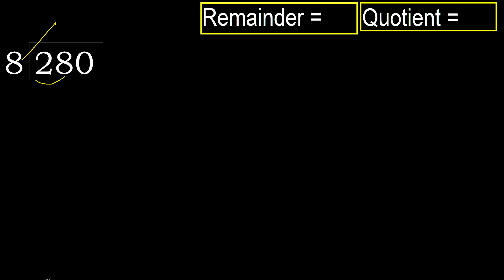8 multiplied by which number is nearest to 28 but not greater? 8 multiplied by 4 is 32 — 32 is greater. Multiplied by 3: 24 is not greater. 28 minus 24 is 4. Next.